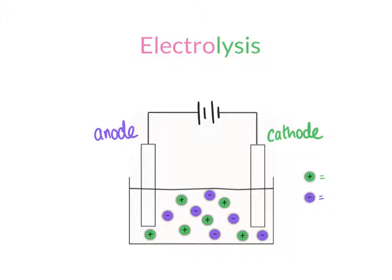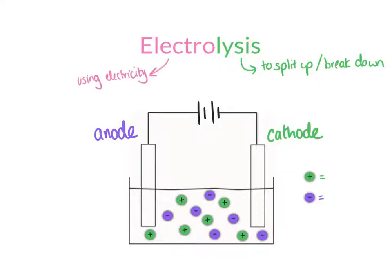We looked at the word Electrolysis and what it literally means. We split it into two parts: Electro and Lysis. Lysis means to split up or break down, and Electro refers to the fact that this process uses electricity. So literally, this word means to split up or break down using electricity.